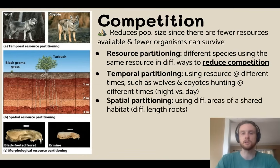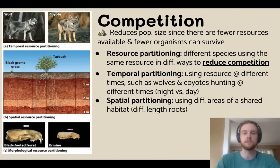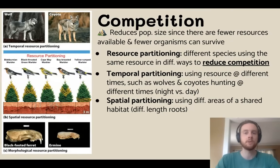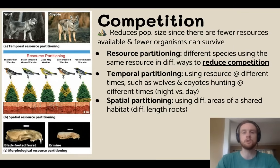Then we have spatial partitioning — using different areas of a shared resource. We have an example of two different grasses: one sends its roots to an extremely deep portion of the soil while the other accesses shallower parts, so they don't compete directly for water and nutrients. We also have an example where different species of warbler occupy slightly different portions of the same tree to make their nests and find food, allowing many more birds to occupy the same tree.